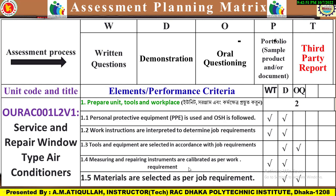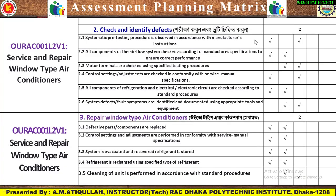Element type 2: Check and identify defects. A systematic pre-testing procedure is observed in accordance with manufacturer instructions. All components of the air flow system are checked according to manufacturer specifications to ensure correct performance, assessed via written test and demonstration.